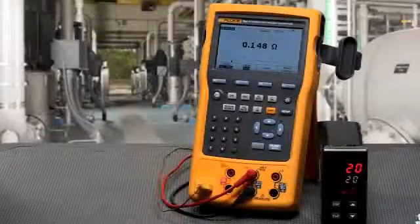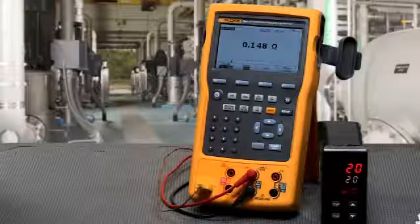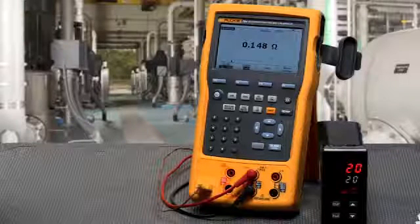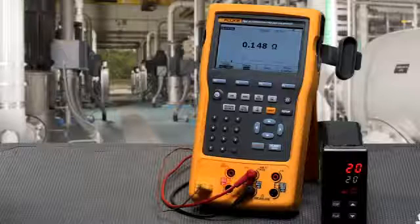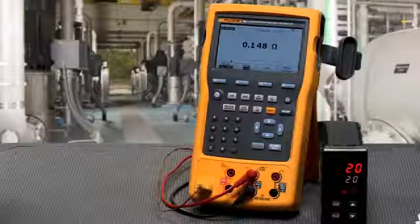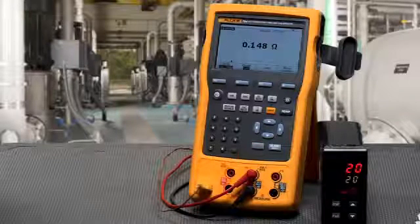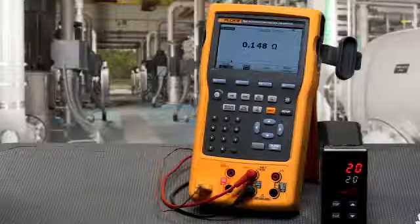Next, we're going to look at some of the troubleshooting features of the 753 and 754 calibrators. These features include ramping the output, stepping the output manually and automatically, making min-max measurements, and doing log measurements.